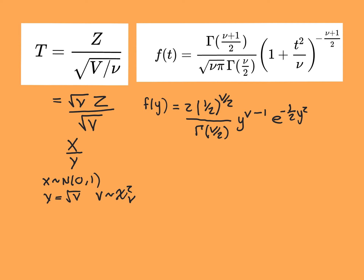Welcome to part two. I've copied across the most important bits: what we started with, what we're aiming for, how we slightly modified what we were starting with, and how we rename Z to X, and then rename to the square root of V as Y. So X is standard normally distributed, and V is the square root of the chi-square distribution with nu degrees of freedom. At the end of the previous video, we found the PDF for the distribution of Y.